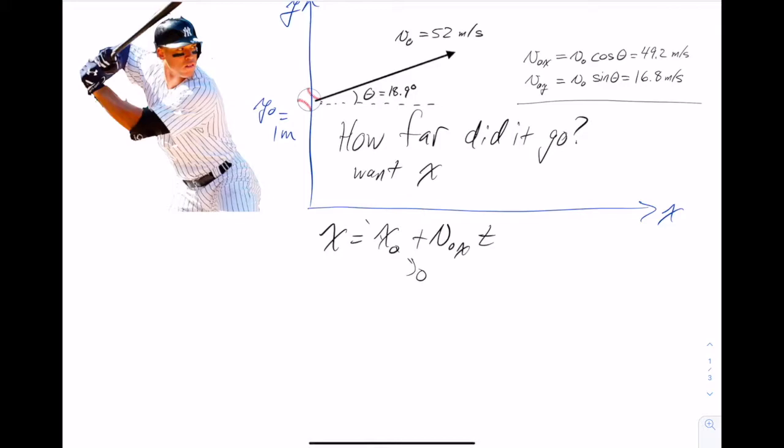So we want to know x, we know v0x, but we don't know time. So the question is, how do we figure out time? Well, all of our kinematic equations involve time. So we have to think a little bit about what does it mean when we say how far does it go? What do we know at the ending point?